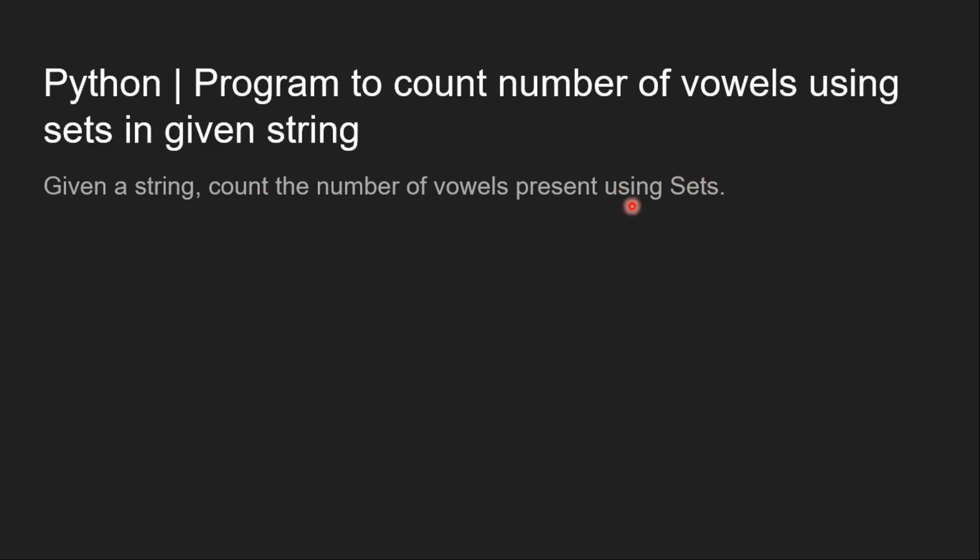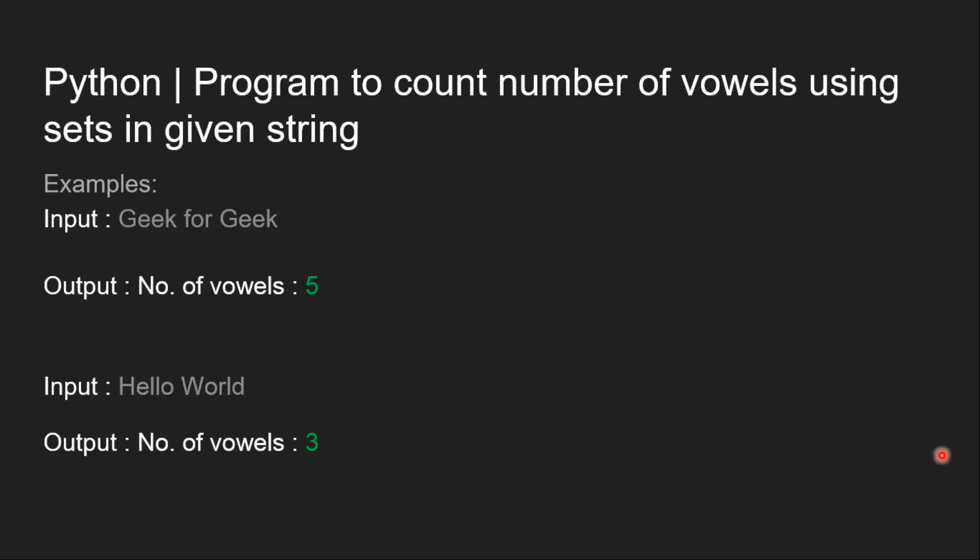So let's clear with the examples. First we have input as GeeksforGeeks. The output should be 5 which are number of vowels in case of input that are 4 e's and 1 o.